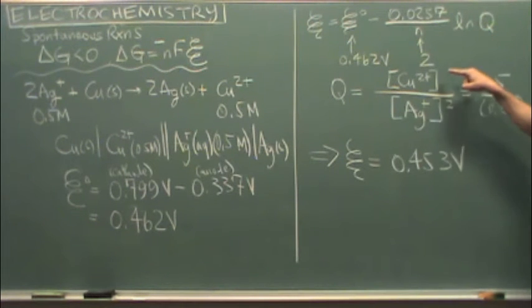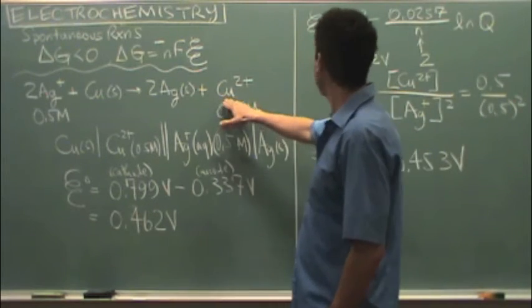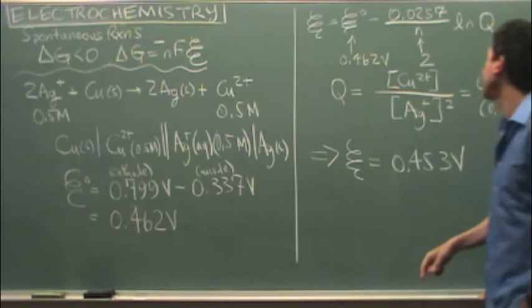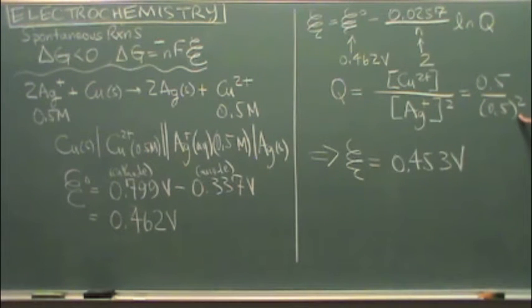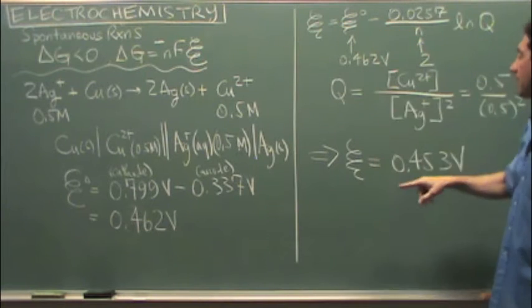This is from Chem 2B. Q is products over reactants. So products, copper over silver squared because of the two right there. So that's what you see here. Because both the concentrations are 0.5, this would be the calculation. So I put this in for Q. I've got two there and this I just found.